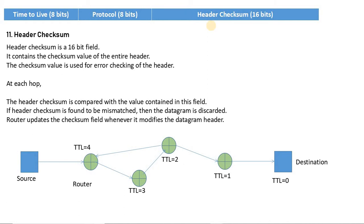When the packets are processed, the value of the checksum is updated to new values. The router is responsible for this: if it is changing something in the header — such as the TTL value which changes at each router from 4 to 3 to 2 to 1 — the 16-bit checksum value will also change accordingly. So if the router makes any important changes that need to happen, like TTL or some options, the 16-bit checksum value will also be updated.